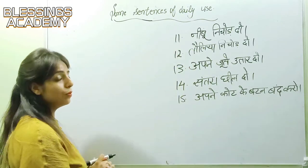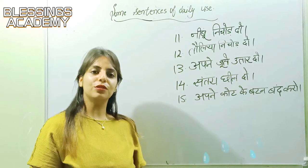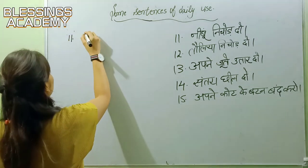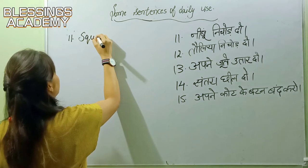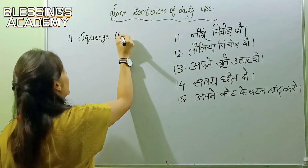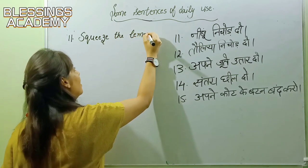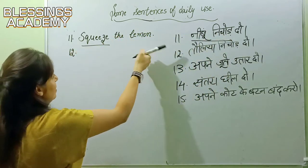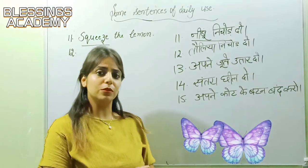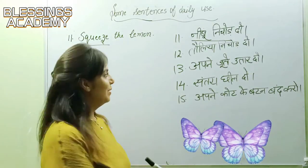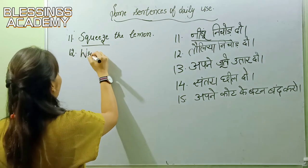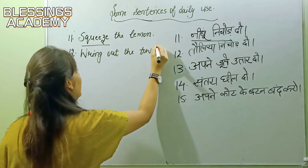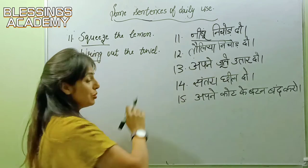Let's speak about the last five sentences. The eleventh is 'Nimbu nichodo' — very commonly used today. The translation is 'Squeeze the lemon.' 'Squeeze' is used for squeezing a lemon. The twelfth is 'Tolia nichodo.' For wringing a towel, we don't say 'squeeze' — we say 'Ring out the towel.'